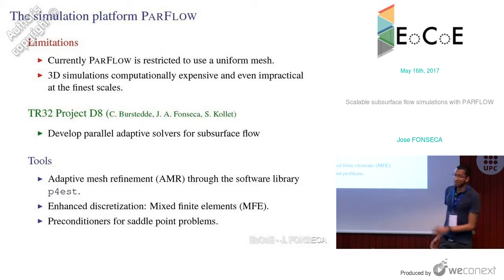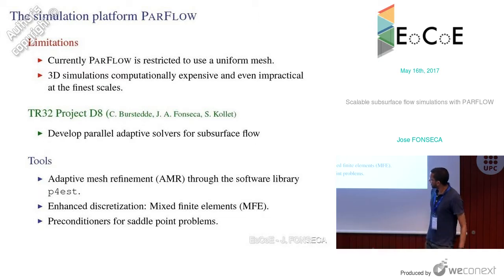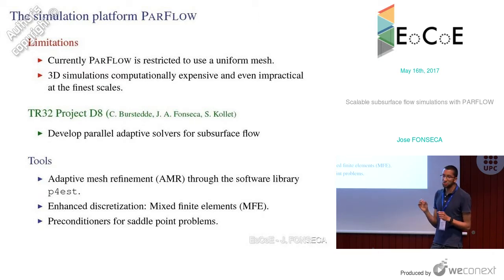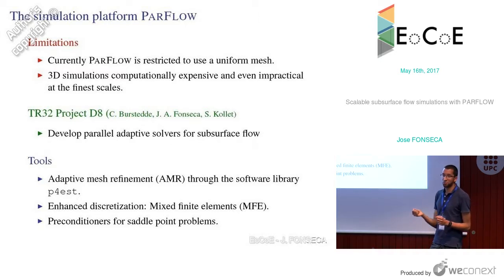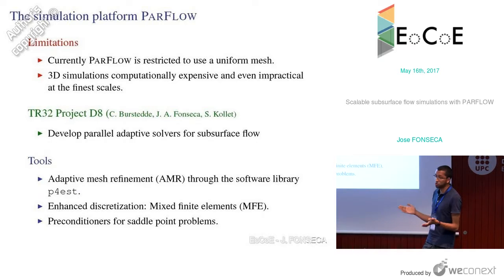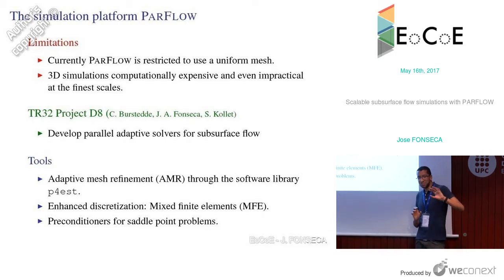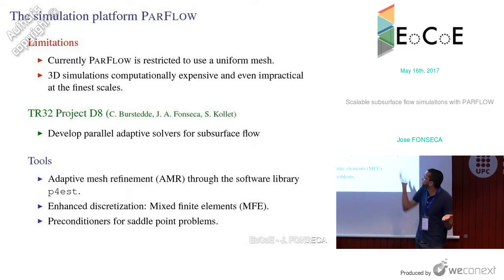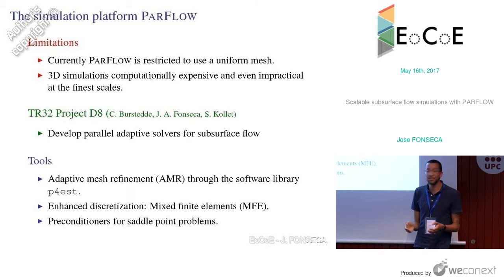The first step is to identify the limitations of your code. One bottleneck is that the code is restricted to using a uniform mesh, which makes 3D simulations really expensive at fine scales. For example, people doing root modeling need to look at the centimeter scale — there is physics happening in a specific area, and they want to refine only there, but being tied to a uniform mesh means you have to refine the whole mesh, which can be impractical.